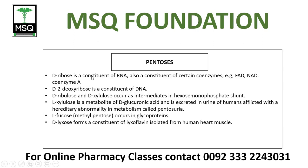Pentose: D-ribose is a constituent of RNA (ribonucleic acid) and also a constituent of certain coenzymes — FAD, NAD, and coenzyme A. D-2-deoxyribose is a constituent of DNA (deoxyribonucleic acid). D-ribulose and D-xylulose occur as intermediates in the hexose monophosphate shunt.